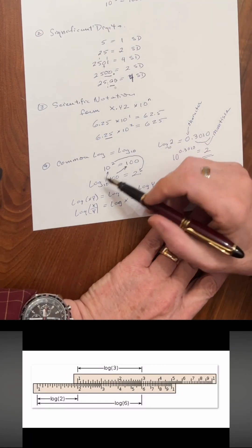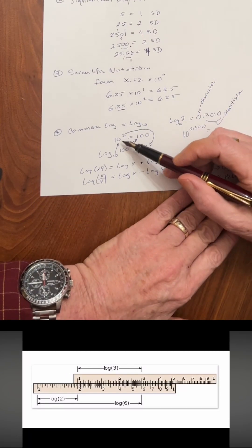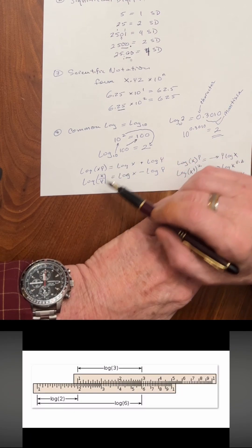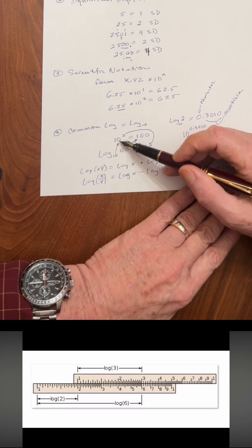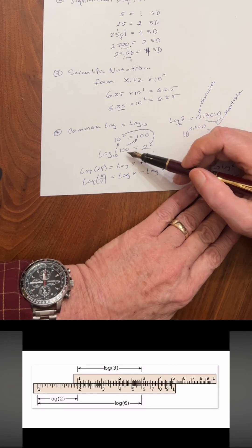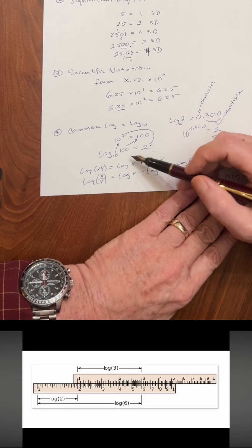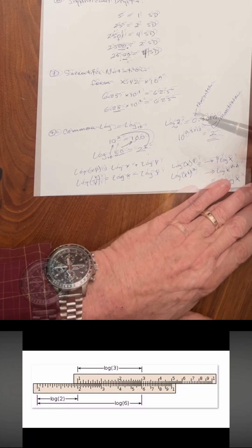Finally, let's combine it all into something called common log, which is log base 10. So if we have a number, 10 to the 2 equals 100. We can also refer to that as log base 10 of 100 equals 2. The base 10 means that we're raising 10 to some power. The 100 is the value that we're taking the log of, and the 2 is the exponent that we would have to raise 10 to to reach this number.